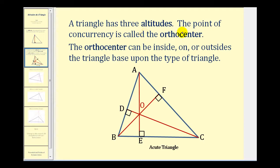The intersection of the three altitudes, or the point of concurrency, is called the orthocenter. Here we see a triangle with its three altitudes constructed, and this point of concurrency, or point of intersection, is the orthocenter.